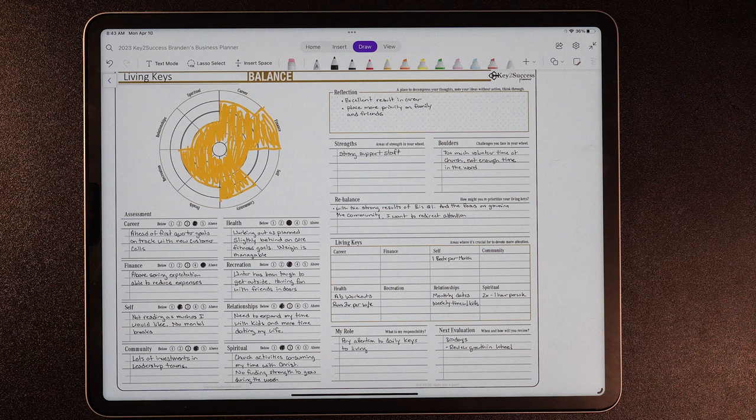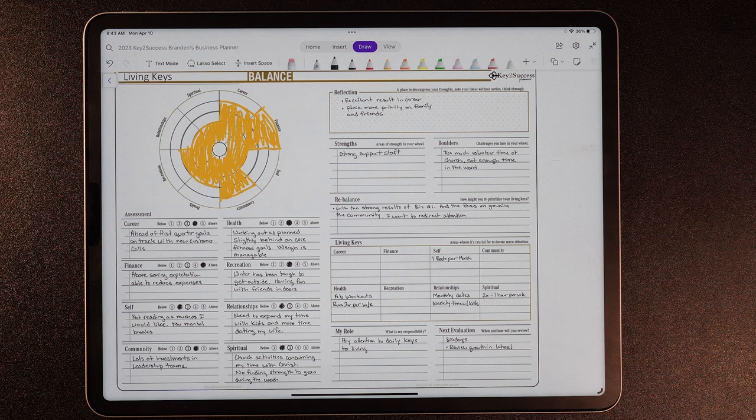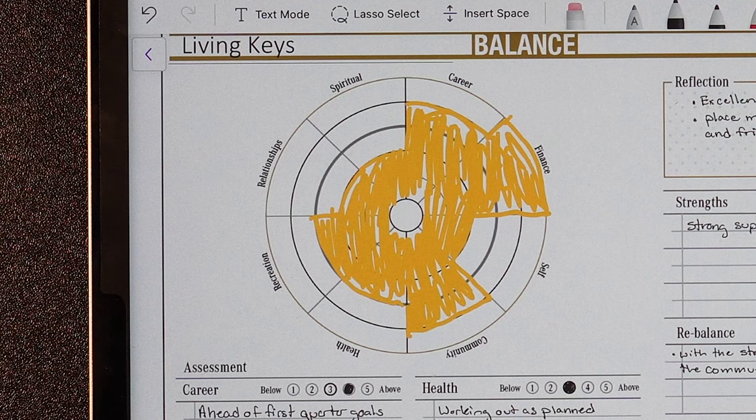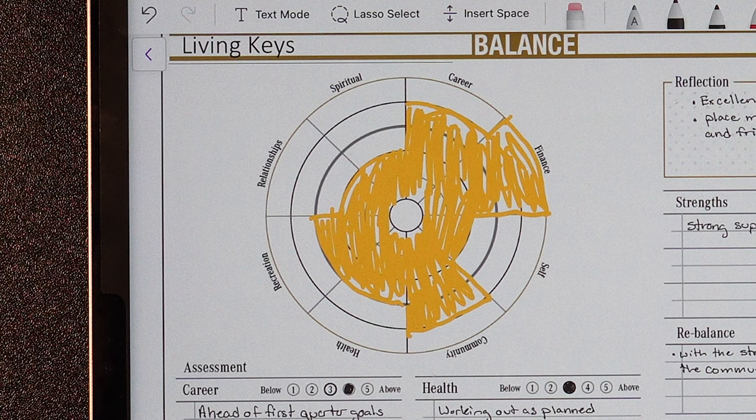The Living Keys is a tile that's designed to be a life balance wheel. It's going to help you reevaluate the different aspects of your life so you feel complete and balanced in every aspect of your life.